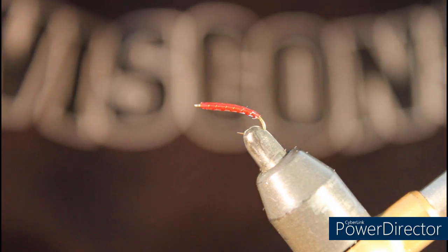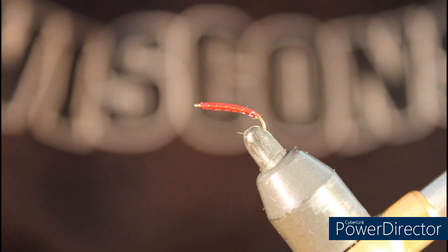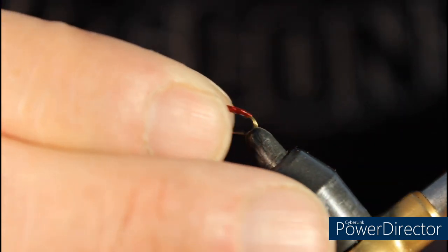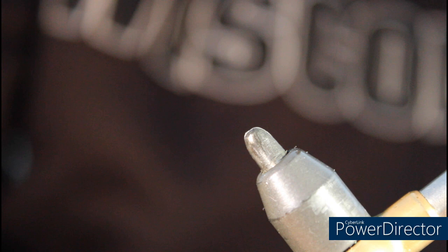Today we're going to tie a Youngblood, which is a red midge pattern used primarily in the rivers here in Colorado. We tie these in size 18 to 22.